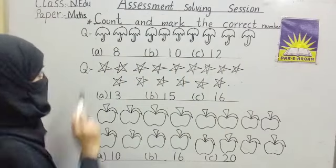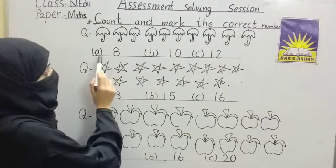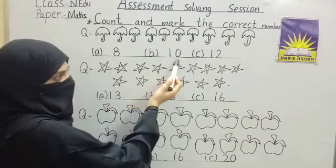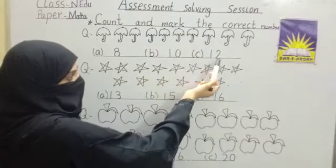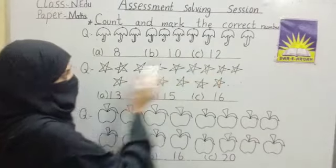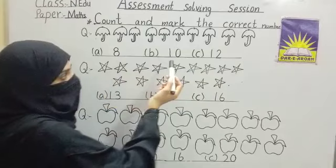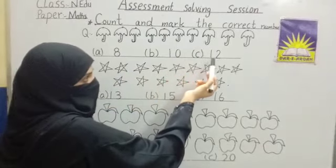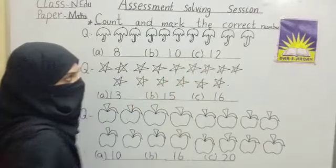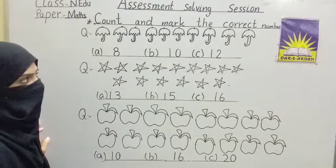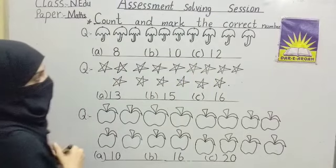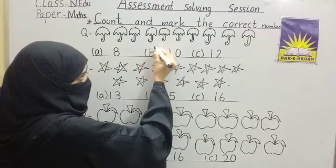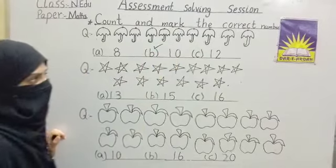Now see the options. Option A: eight. Option B: ten. Option C: twelve. How many umbrellas? Yes, very good — ten. Tick option B.